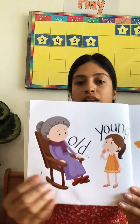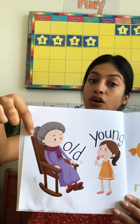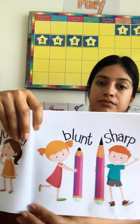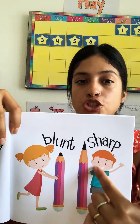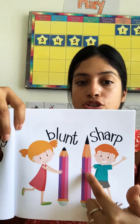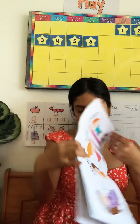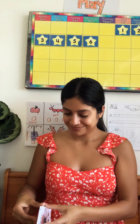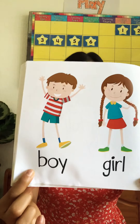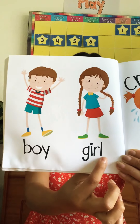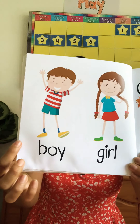Old. And young. Young. And old. Blunt. And sharp. Sharp. And blunt. Boy. Girl. Girl. Boy.